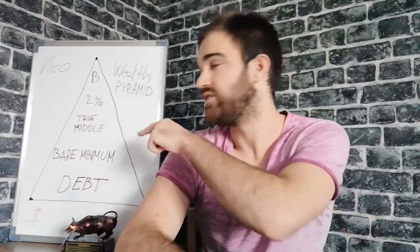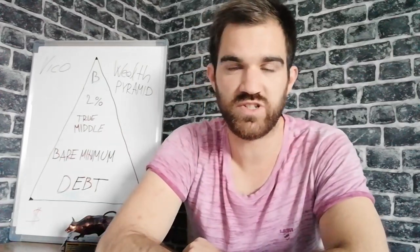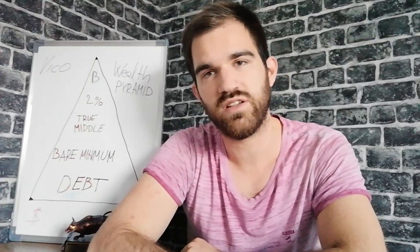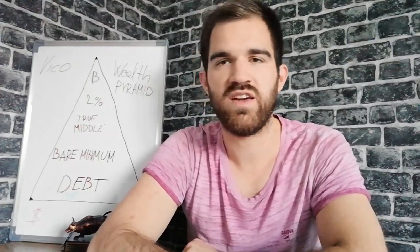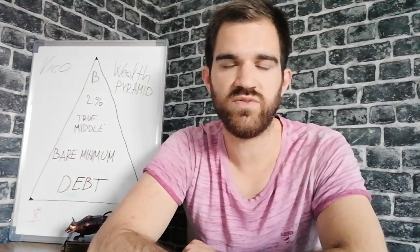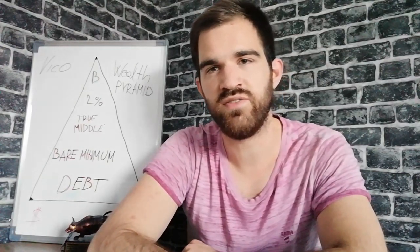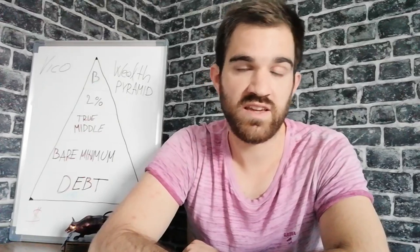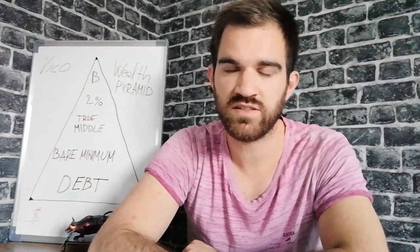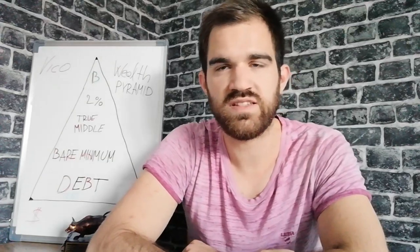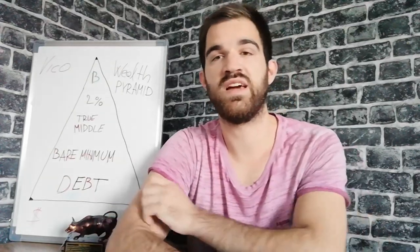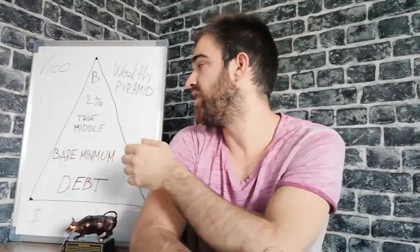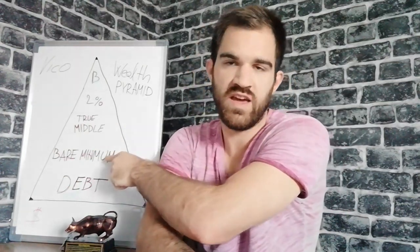In fourth place of this wealth pyramid is the 2%. These are people who have about half a million dollars or more in net worth. They have a minimum of $10k every month for investing and earn about $300,000 to $400,000 or more per year. These people are usually executives in some mid-size company. They typically manage money from people in the true middle or bare minimum, and that is how they earn their money.